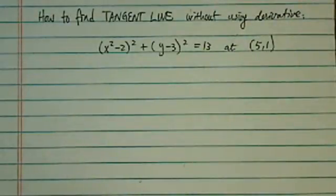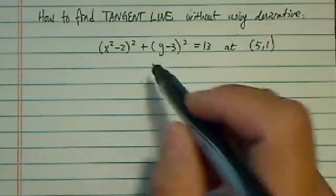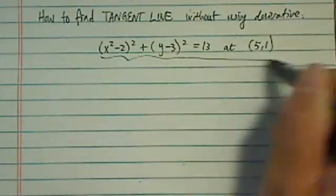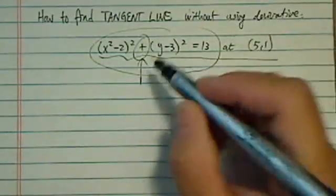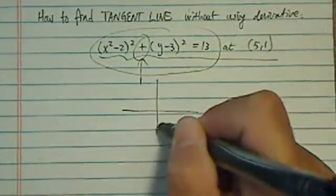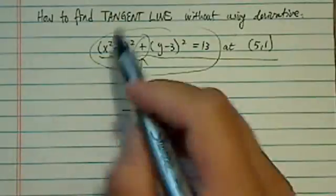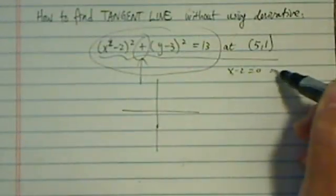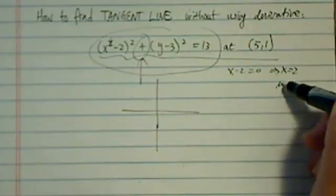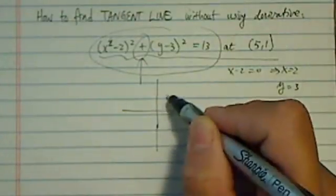Derivative is a powerful tool. In the lack of it, we're going to find a tangent line to the circle. Because of the adding sign here, we have a circle. The center of the circle is when you set this one equal to zero, x minus 2 equals zero, so we have x equals 2 and similarly y equals 3.